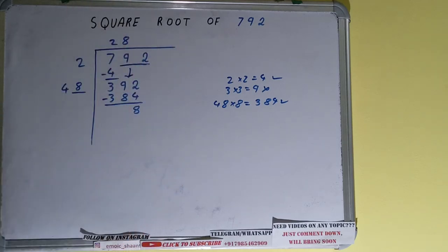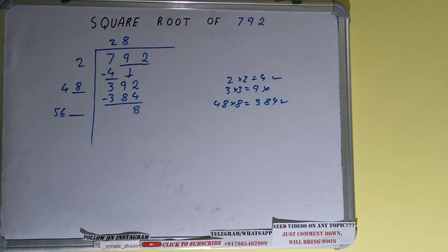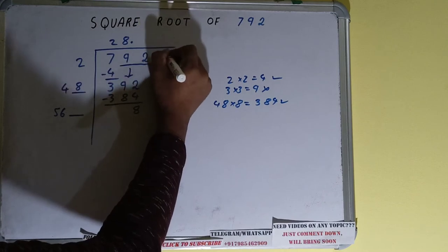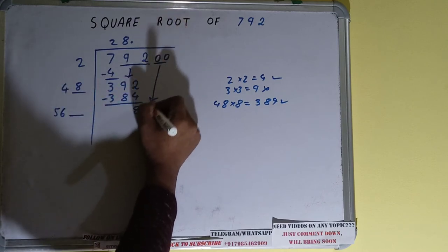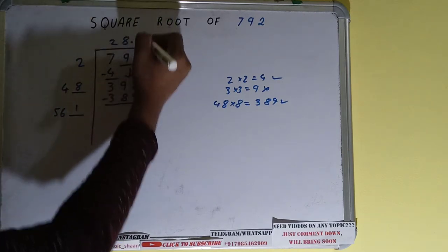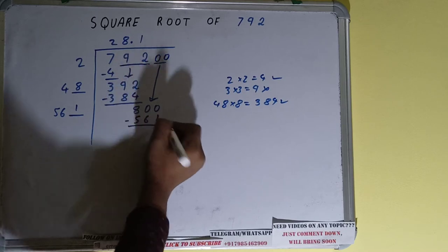So 8 here and 8 here, 384, subtract it and 8 will be left. Now 48 into 8, so add both. 48 plus 8 will be 56 and 1 digit extra. We need to make this number big so that we can divide, but we don't have more pairs so we'll put decimal. Once we put decimal we can bring down pair of zeros and number will become 800. Now we can try one time. One here and one here will be 561, subtract it.